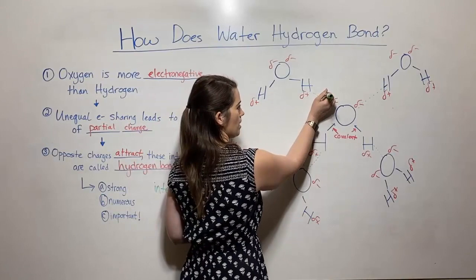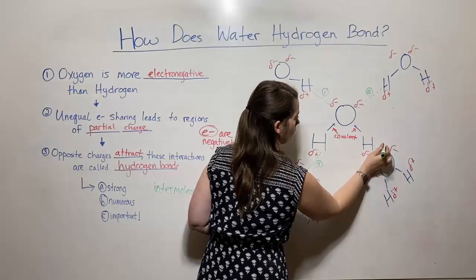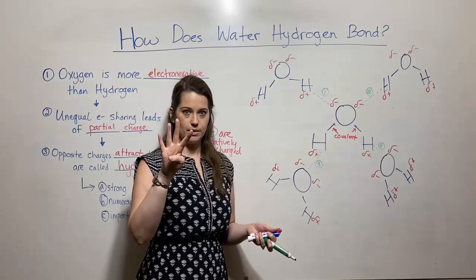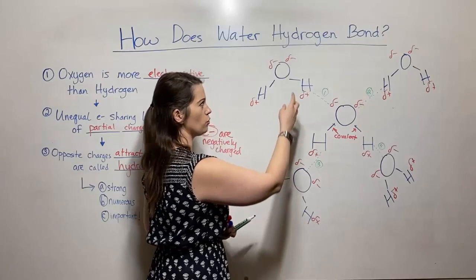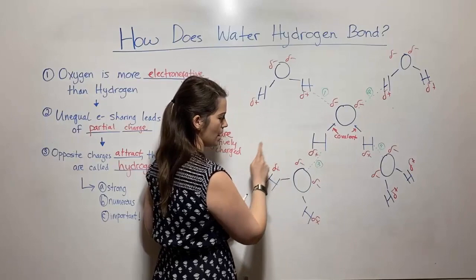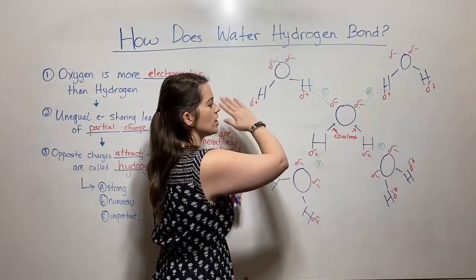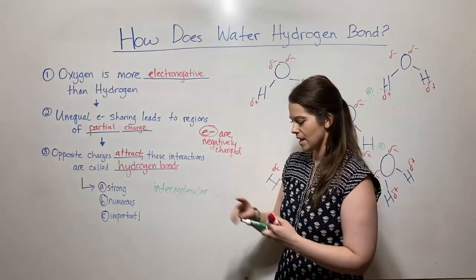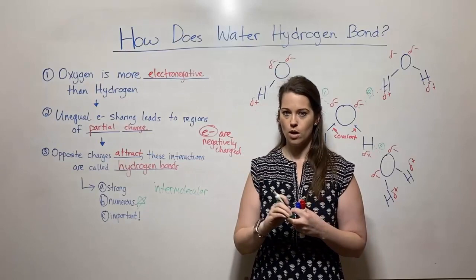Every water molecule can form four hydrogen bonds at a time. This central water molecule has its four partners drawn here, but each of those surrounding molecules also hydrogen bonds four times — to this one and to three other water molecules I haven't drawn. So you can have these huge networks. These hydrogen bonds are so numerous — and that's because every single water molecule can make four of them.